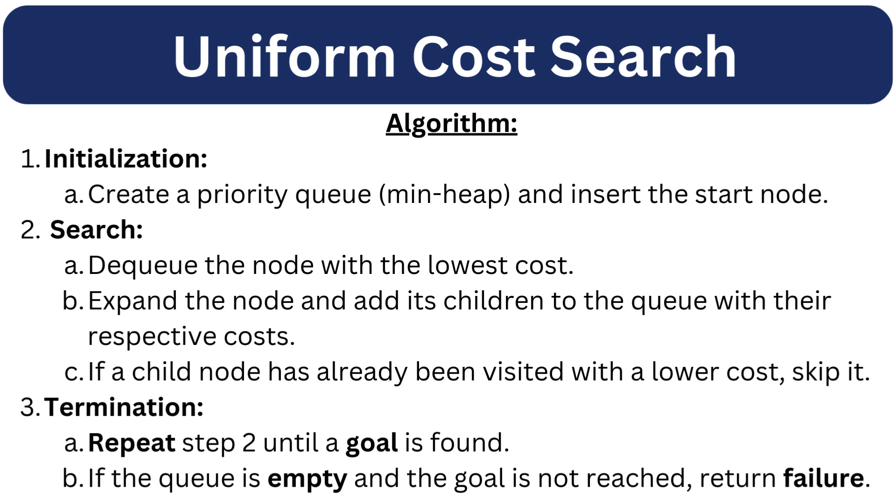Let's discuss its algorithm. Step 1 is Initialization, you will create a priority queue and insert the start node. Step 2 Search, dequeue the node with the lowest cost. We further expand the node and its children to the queue with their respective costs. If a child node has already been visited with a lower cost, you will skip it.